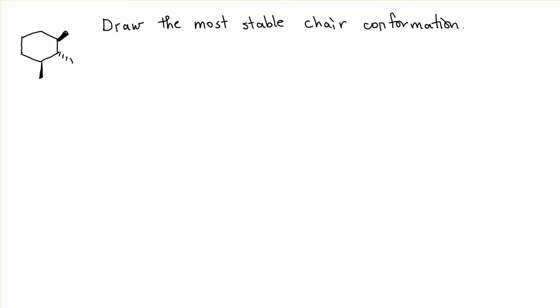I'm going to be talking about chair cyclohexane and drawing different conformations to get the most stable one. We're going to look at this compound, 1,2,3-trimethyl cyclohexane, and I want to know what the most stable chair conformation looks like.